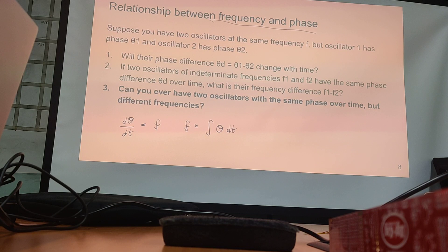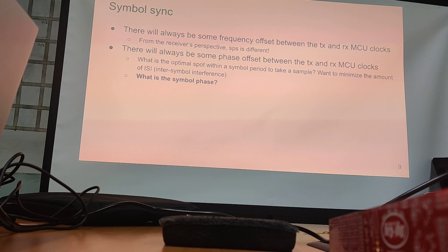So, getting a bit more into the need for symbol synchronization is that so far we've been assuming that the transmitter MCU clock has the exact same rate and is exactly synced with the receiver's MCU clock. But the thing is, no oscillator is ever perfect. So there might be, so if the transmitter MCU clock is sampling at one megahertz, maybe the receiver MCU clock is one megahertz plus or minus ten hertz or 100 hertz. And the thing is, when you're dealing with frequencies as high as... Guys!